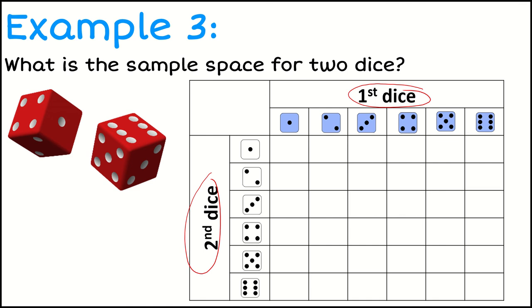Now on my first dice, I've got all the options there. I could get a 1, 2, 3, 4, 5, or 6. And with the second dice, I could get a 1, 2, 3, 4, 5, or 6.